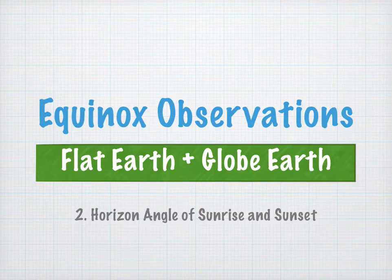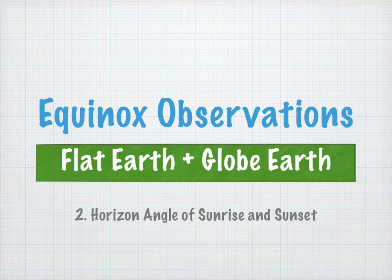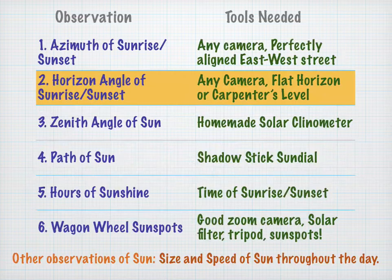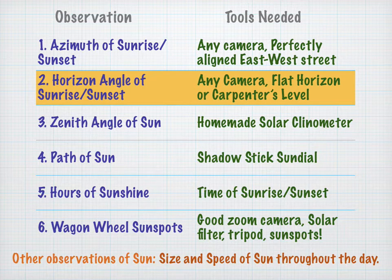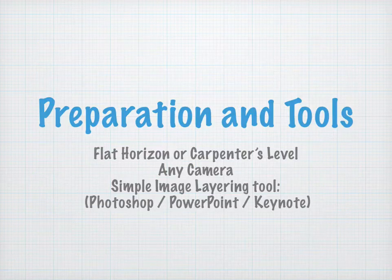Equinox Observations: Flat Earth and Globe Earth, Part 2 — Horizon Angle of Sunrise and Sunset. This is the second video of our six-year series, and we're going to record the angle that the sun makes when it does sunrise or when it sets.